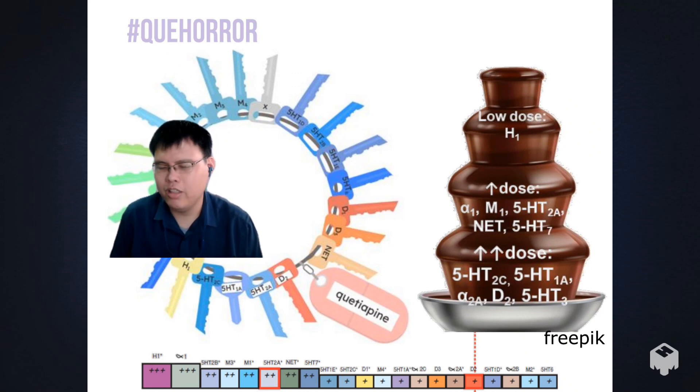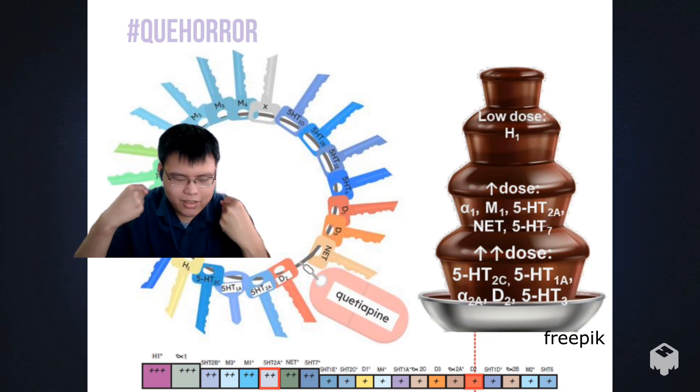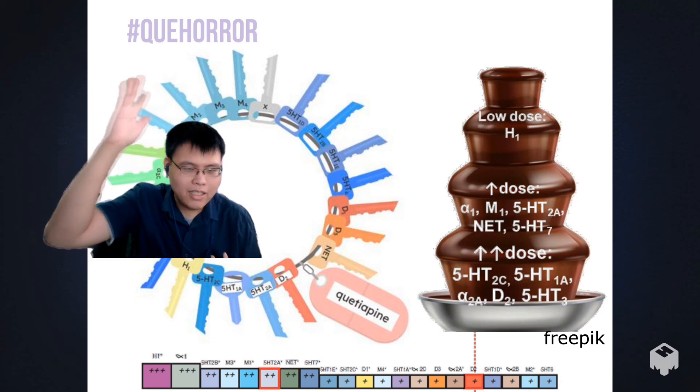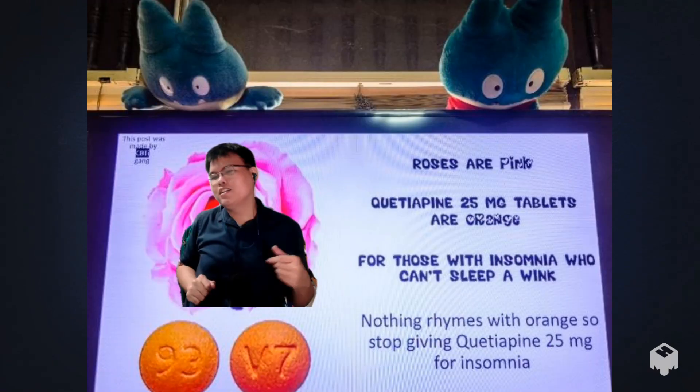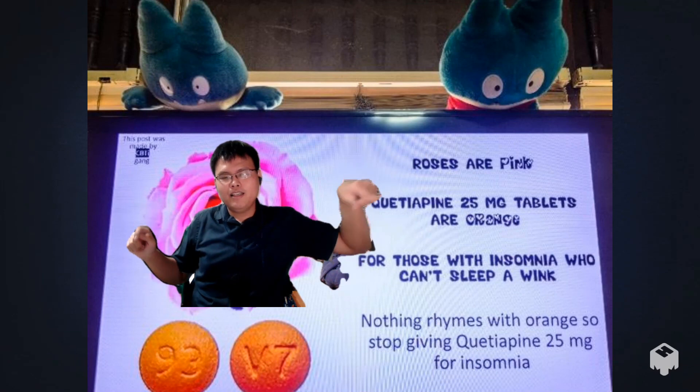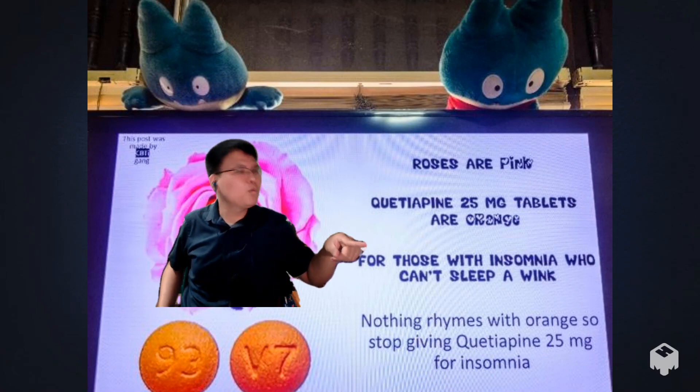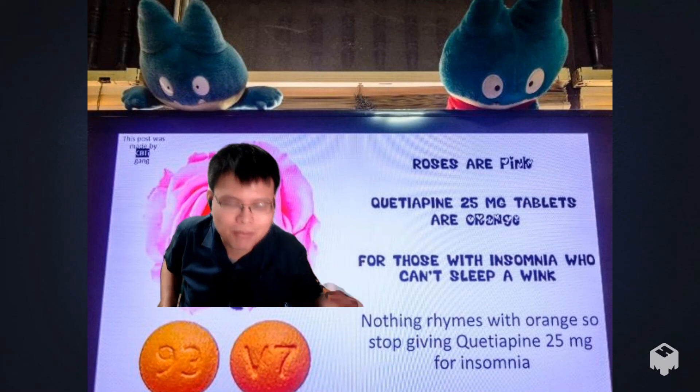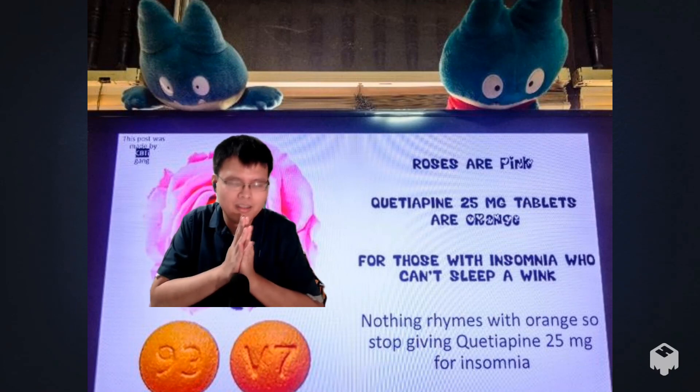Please, I am begging you, break the cycle. Let it end with us. We can end this—end the cycle of low-dose quetiapine for insomnia. Please. I even made a poem for this: Roses are pink, quetiapine 25 milligram tablets are orange. For those with insomnia who can't sleep a wink, absolutely nothing rhymes with orange. So please, please, please stop giving quetiapine 25 milligrams for insomnia. Please, thank you.